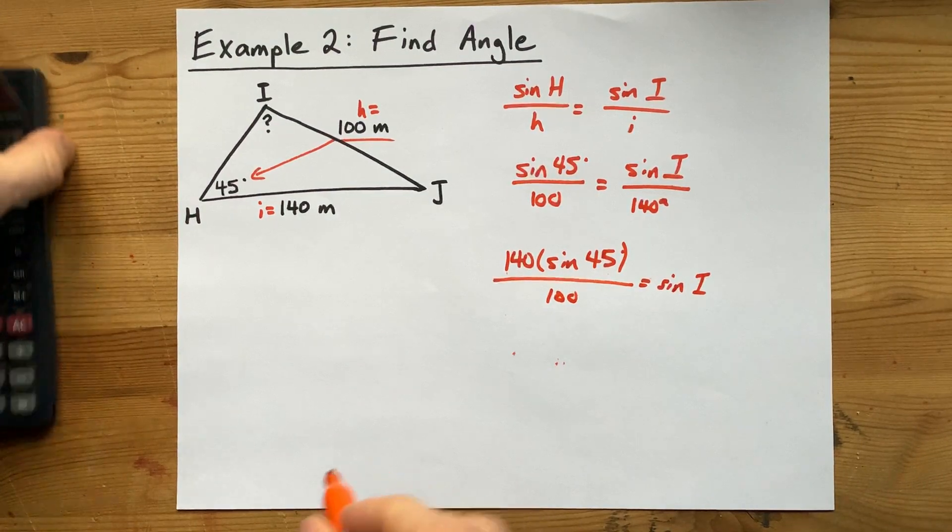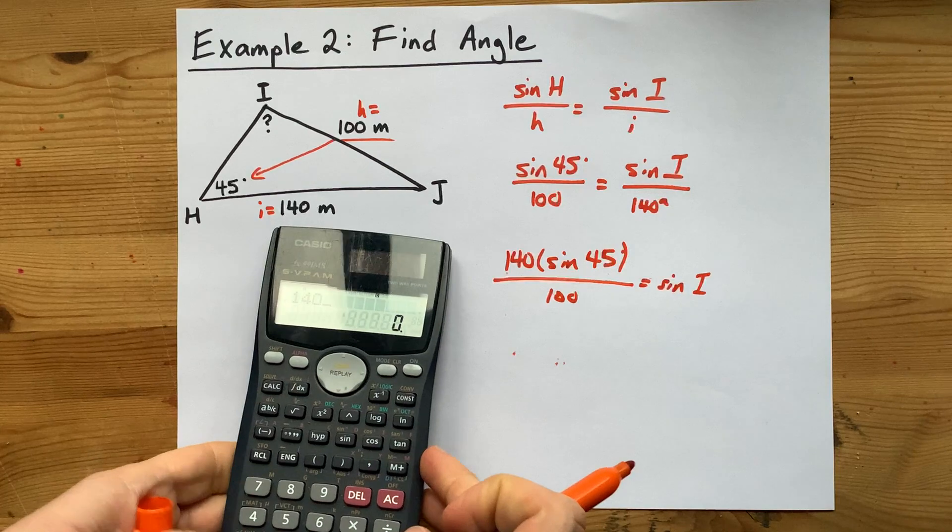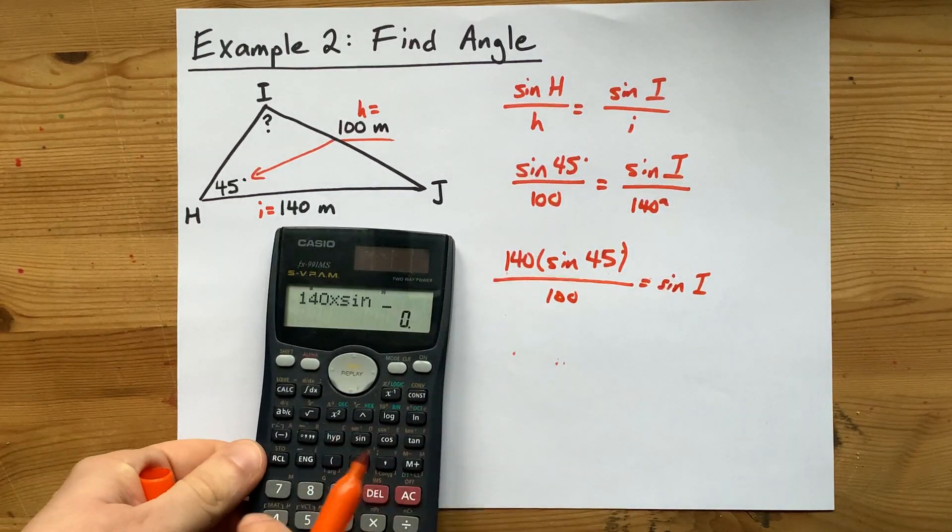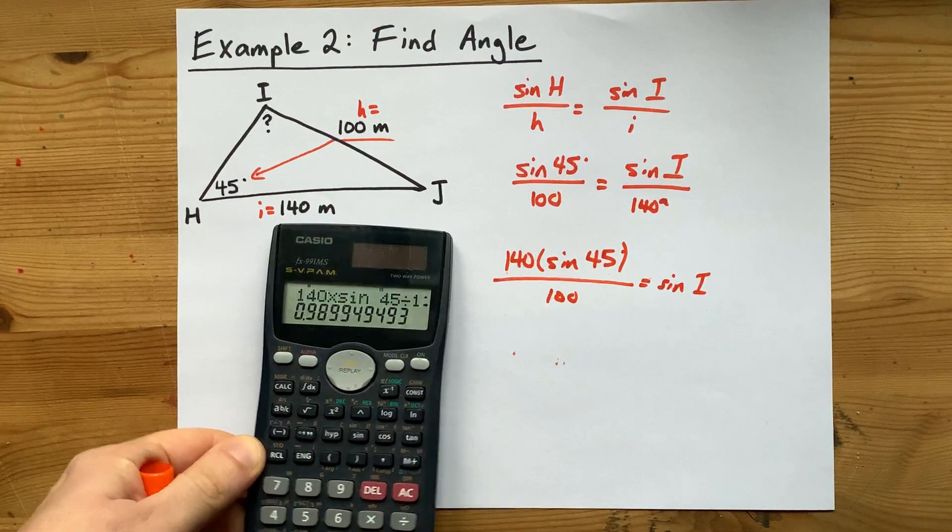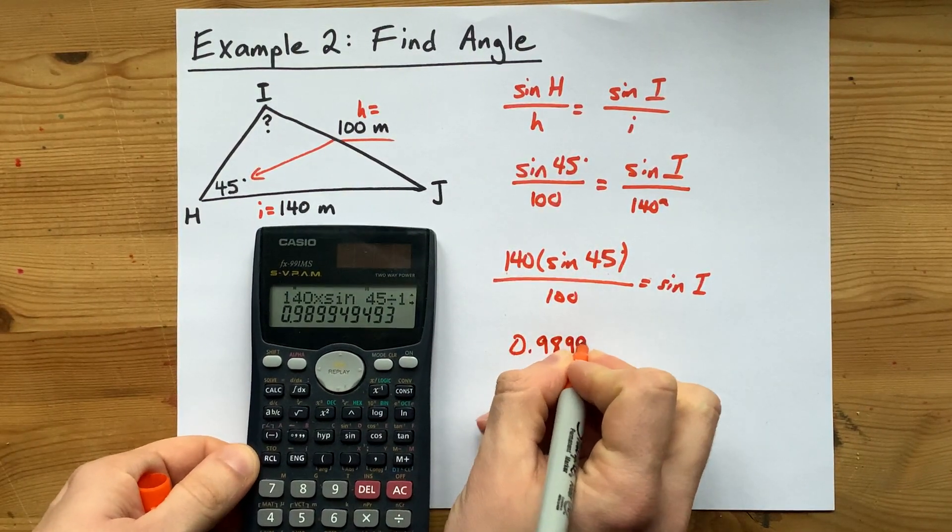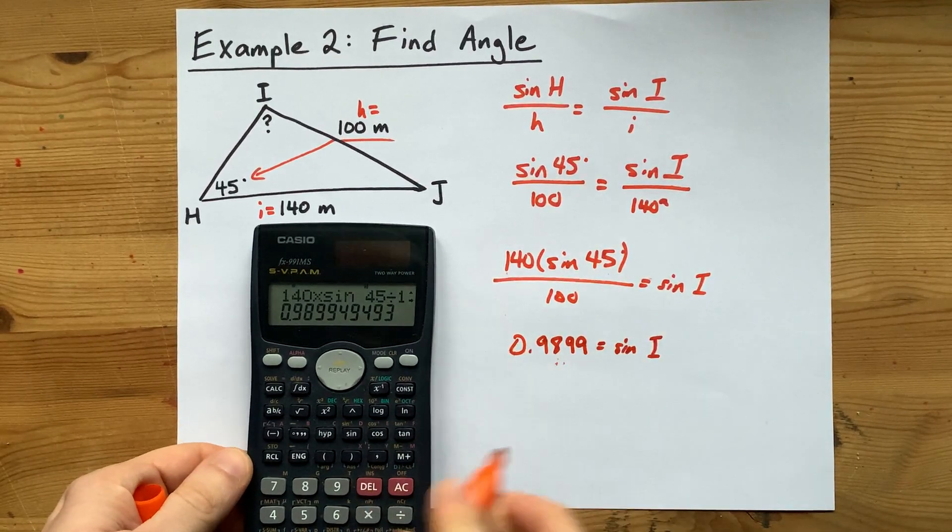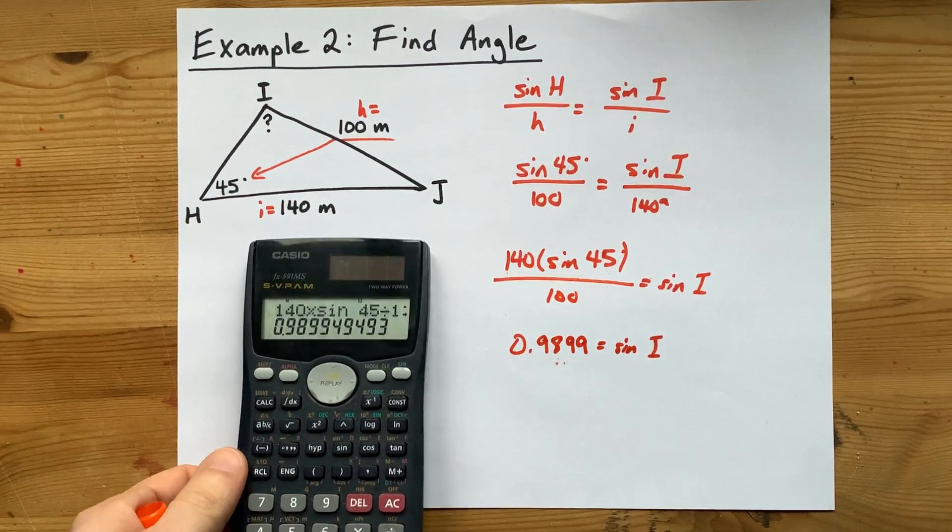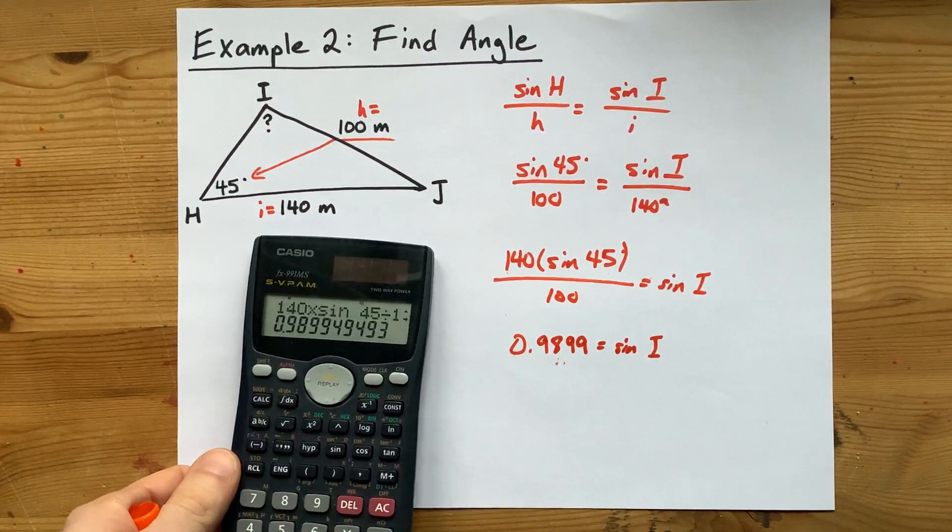All right, I'm going to do all this on my calculator all at once. That's 140 times the sin of 45 divided by 100. I end up with 0.9899. Oh that's pretty high. I want you to carry at least four decimal places here. I'm going to round at the end but I don't like rounding midway through.